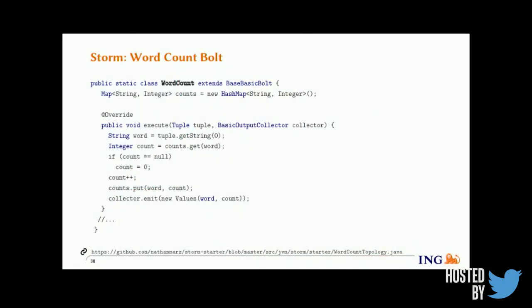This approach has several disadvantages. State management becomes the responsibility of the end user — you need to write your own code to maintain state reliability. In case of out-of-memory exceptions, you need to handle that situation yourself. Explicit mutable state management is a requirement for modern stream processing systems, and this is provided via state abstraction APIs by modern processors such as Flink and Google Cloud Dataflow.